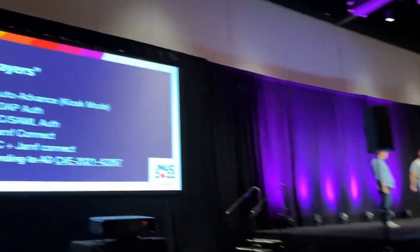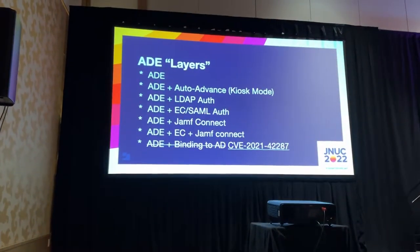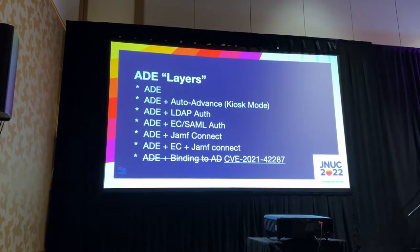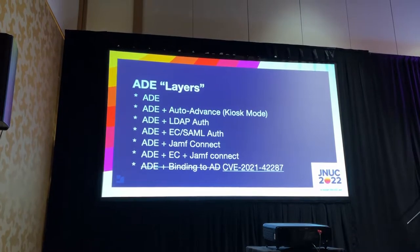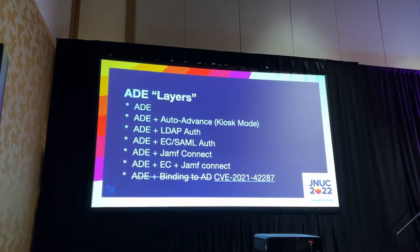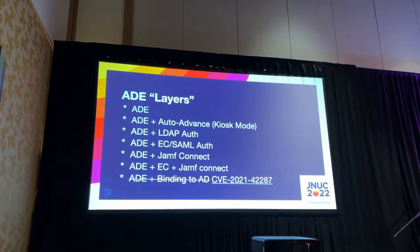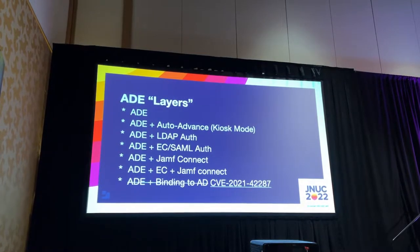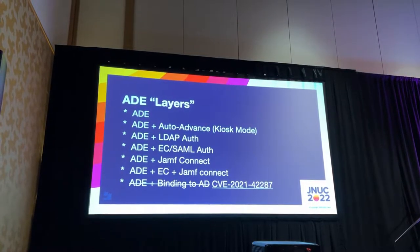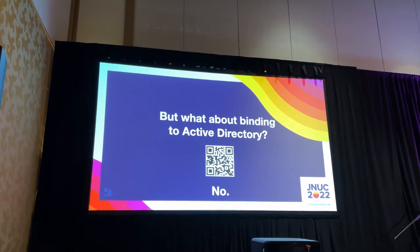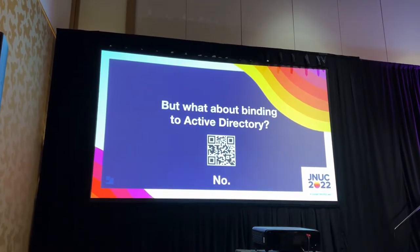A quick look at some of the options we're going to be talking about. We'll break things down into layers — the key differences and why you might want one over the other. We'll show the vanilla flavor with no settings, then auto-advance, then a couple of different ways to authenticate, and then tie it all together with Jamf Connect. And one option that is crossed out and not appearing in this presentation: binding to Active Directory.